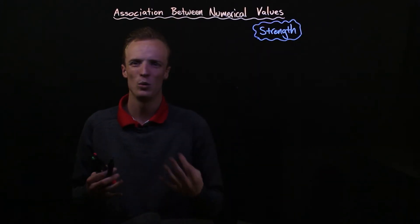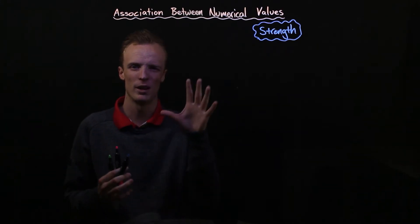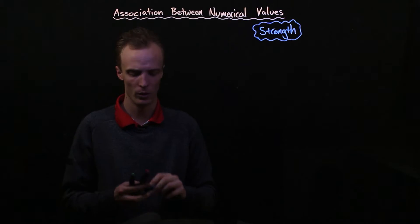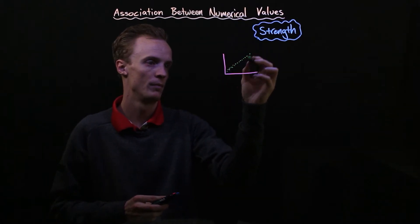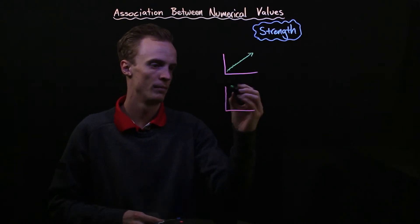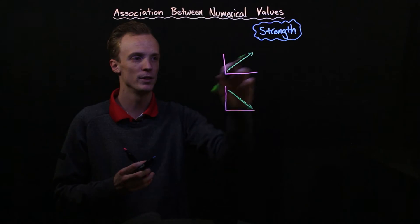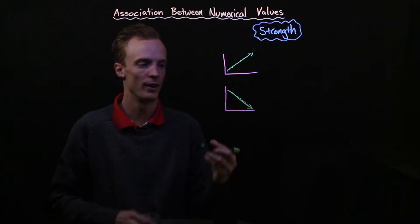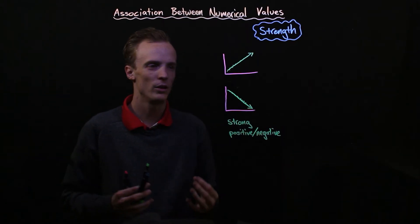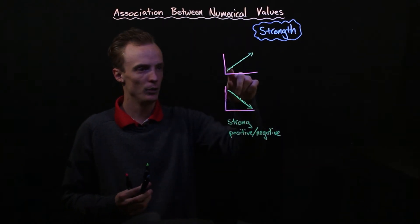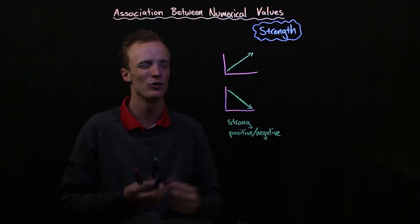When we talk about just looking at the strength of correlation by eye or judging it by sight there are three sort of levels that we talk about. The first one is a strong positive or a strong negative strength, where when we look at it by eye those little dots on our scatter plot pretty much fit perfectly on a straight line.